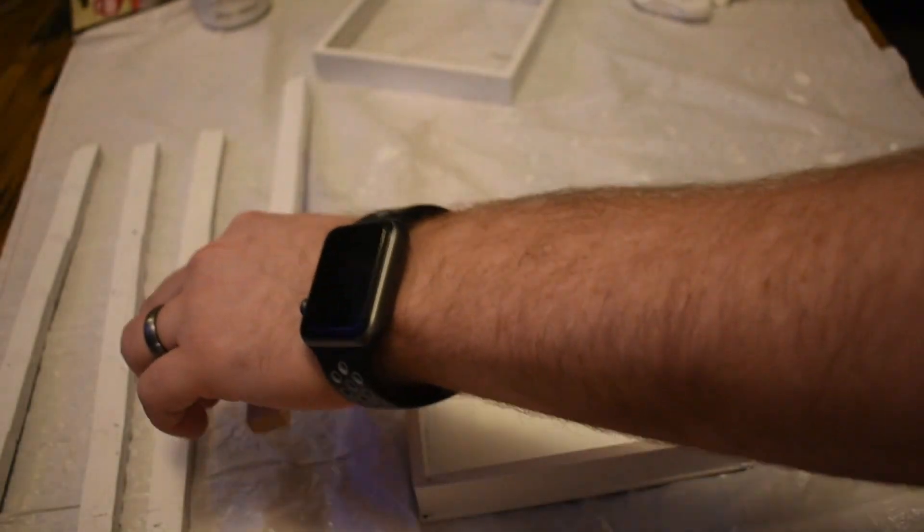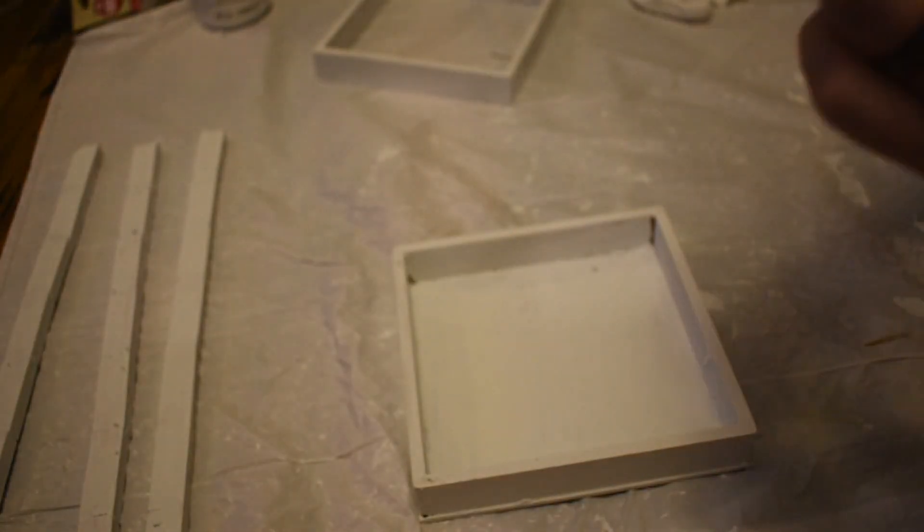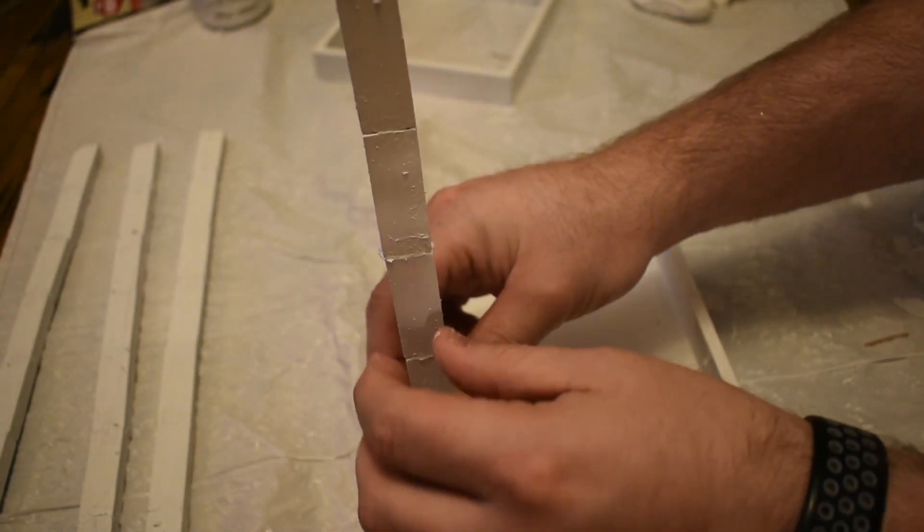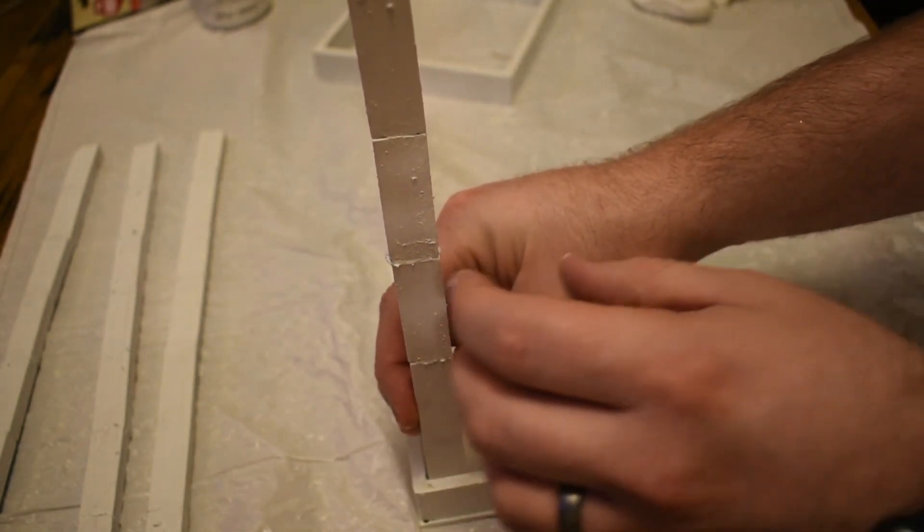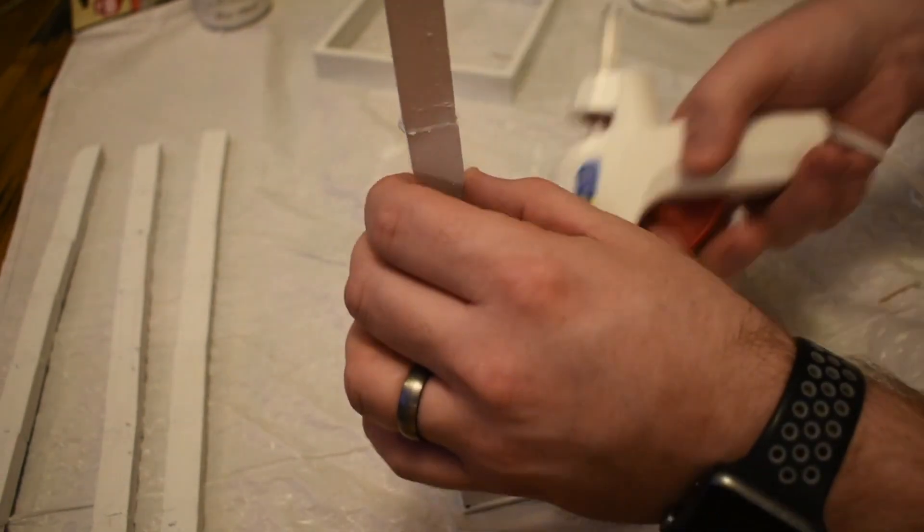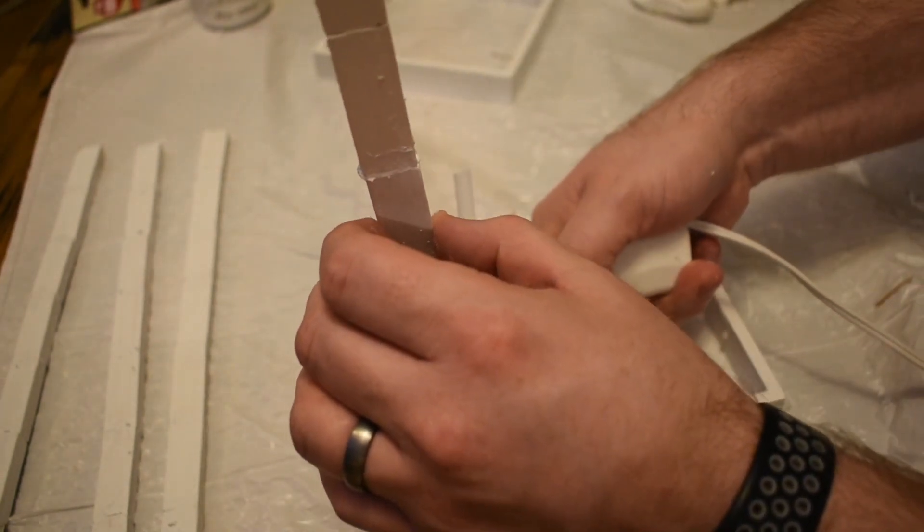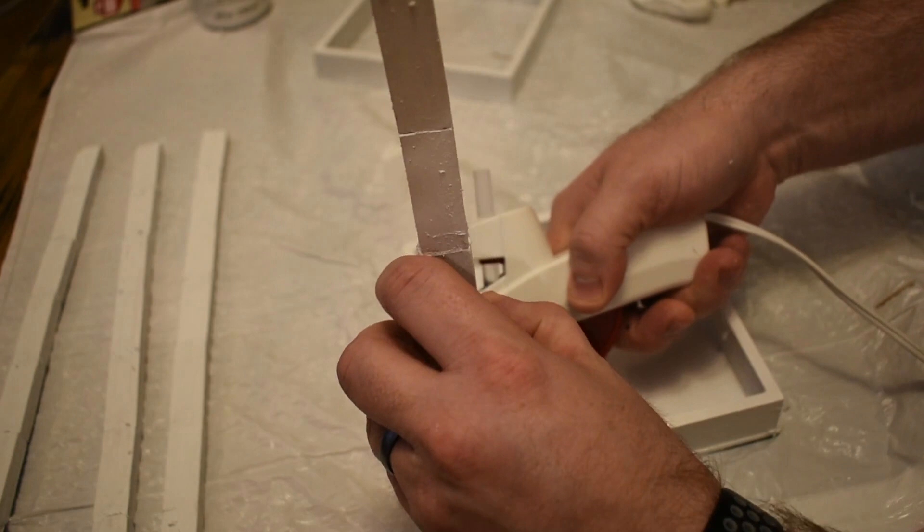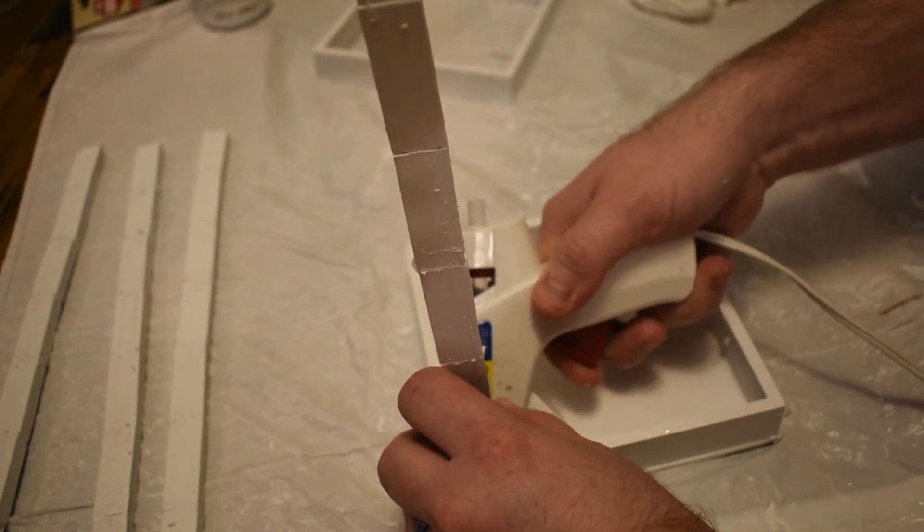Now once you get to this point it becomes a lot of smooth sailing, so you're just going to take your columns and you're going to use some hot glue to attach them to the inside of your base, and those columns will stand straight up once the hot glue is dry. After that, you're going to take the top of it and you're going to attach it using hot glue as well.